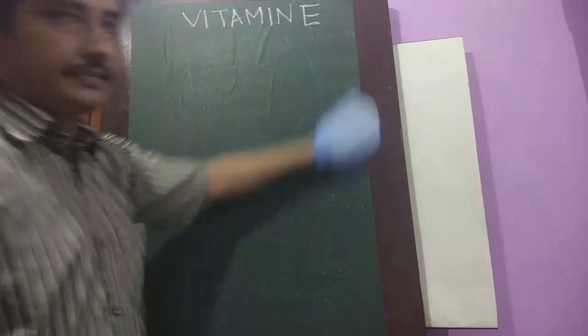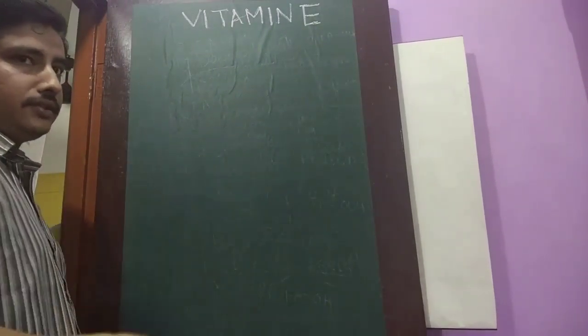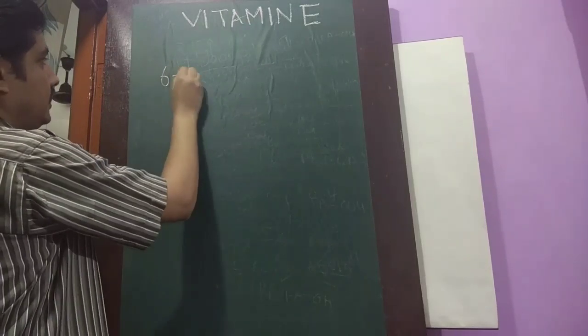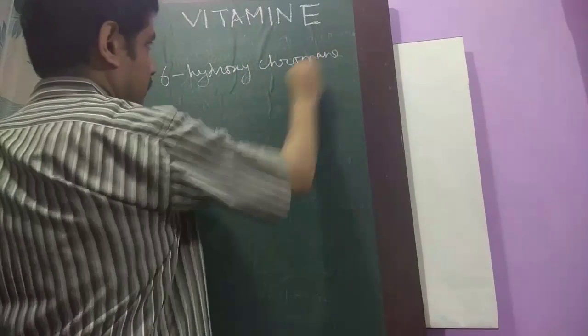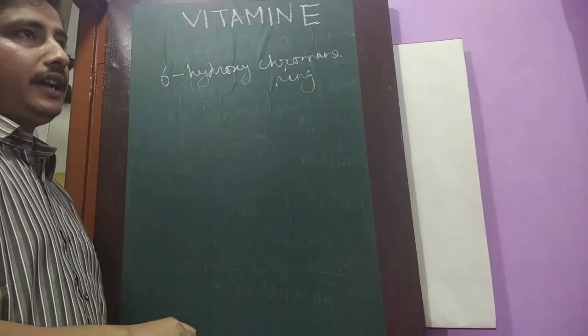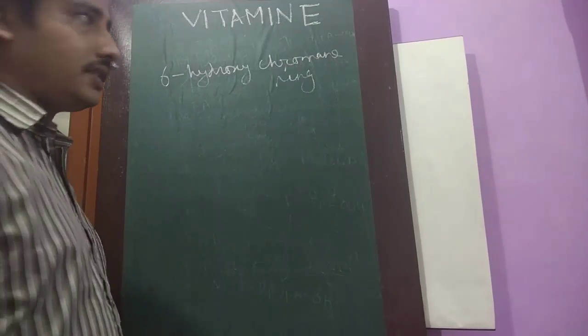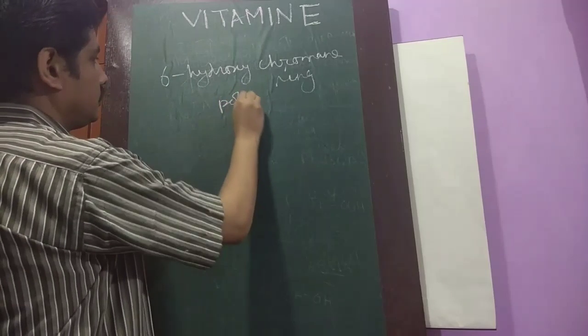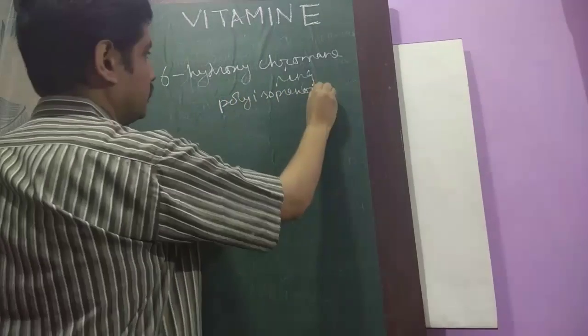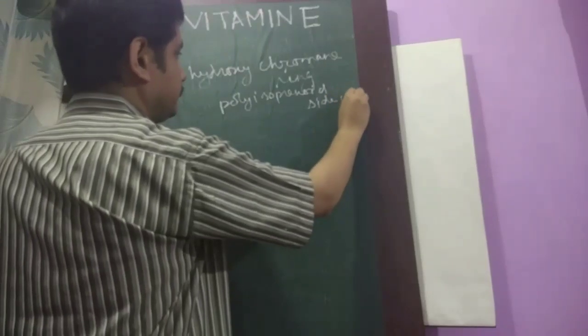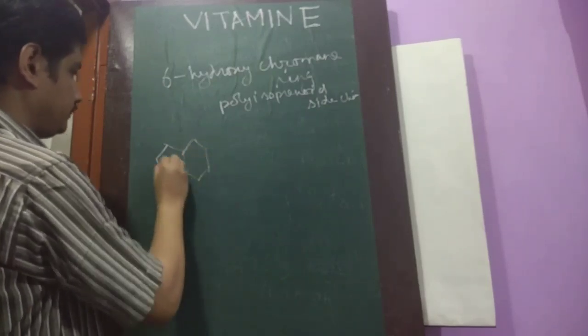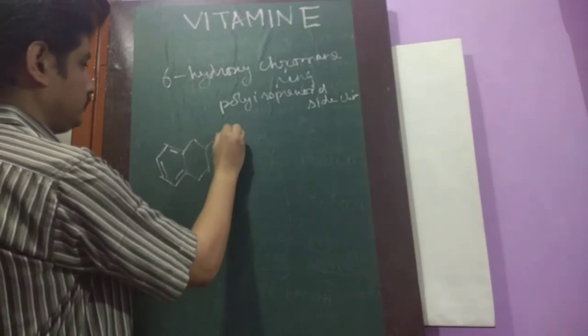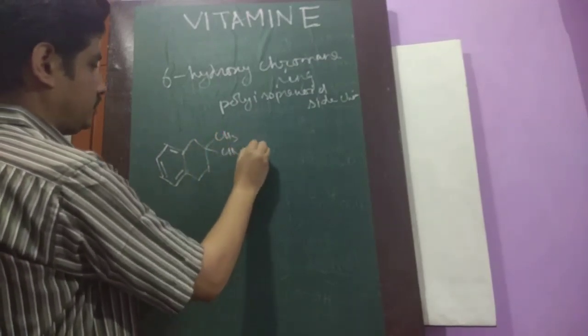Now chemistry of vitamin E. It consists of a ring known as chromene ring which has a hydroxyl group. So it is 6-hydroxychromene ring. Along with the chromene ring, it is attached with a polyisoprenoid side chain. Its structure is like this. It is the chromene ring and the isoprenoid side chain.